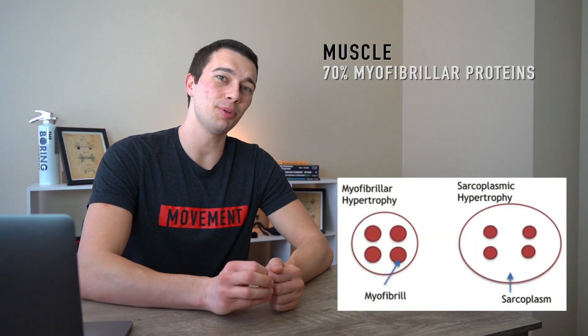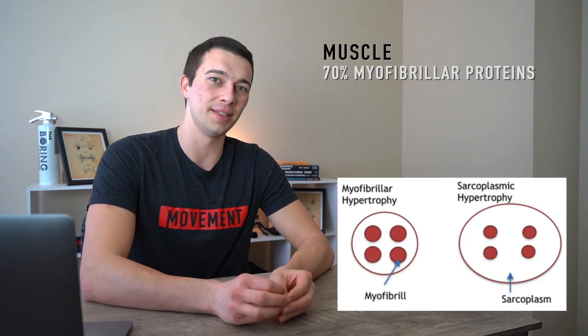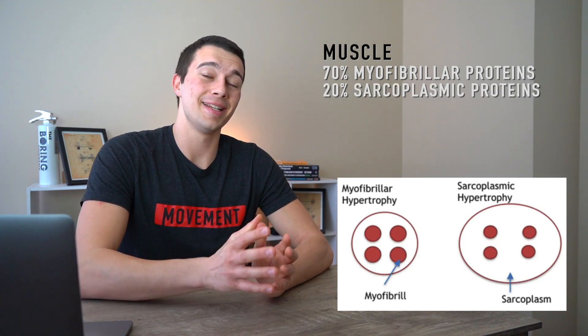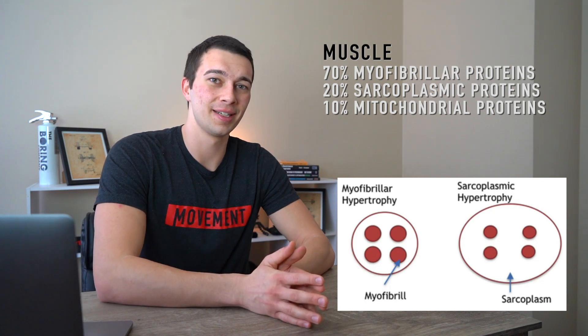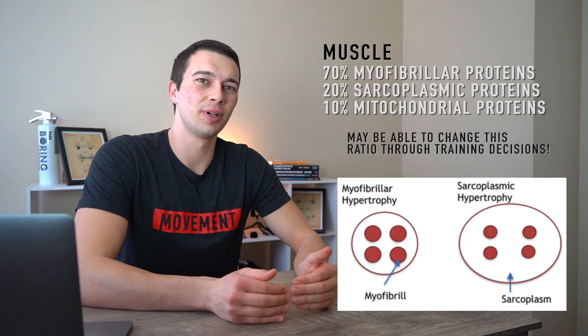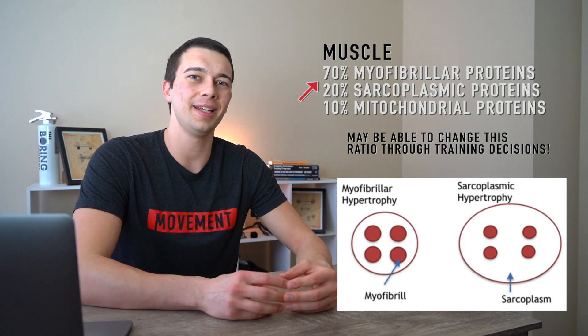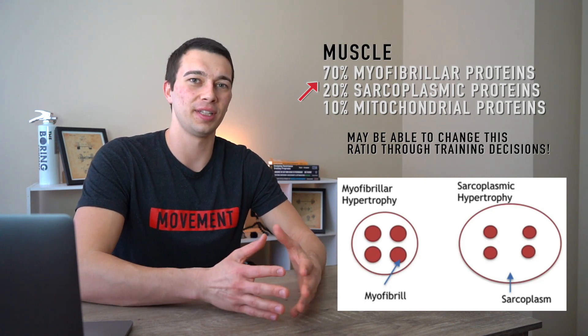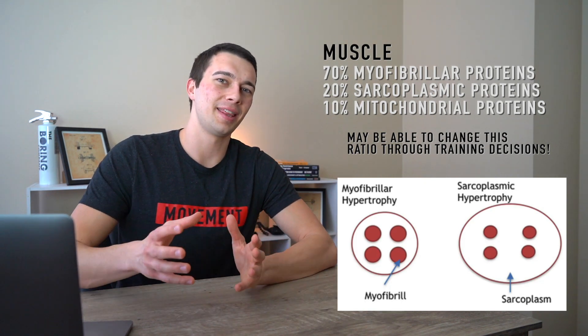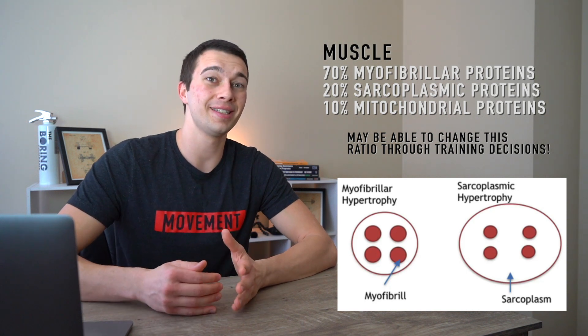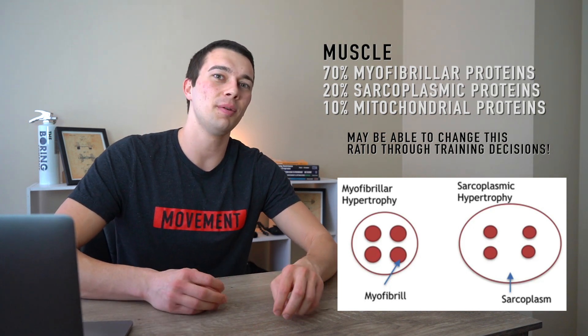To lay the groundwork, muscle is composed of about 70% myofibrillar proteins, 20% sarcoplasmic proteins, and 10% mitochondrial proteins. Theoretically, I can shift this ratio — that 70% to 20% is a pretty rough estimate for the average population — but theoretically I can increase the sarcoplasmic proteins a little bit more than the myofibrillar proteins based on training decisions.